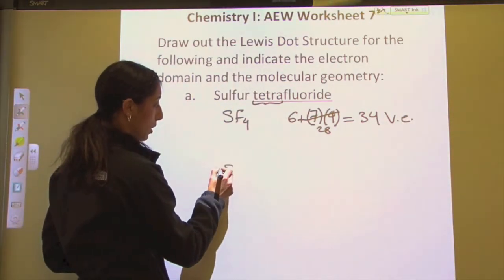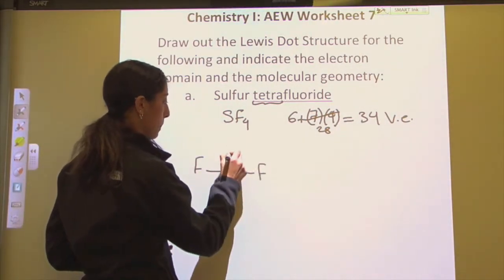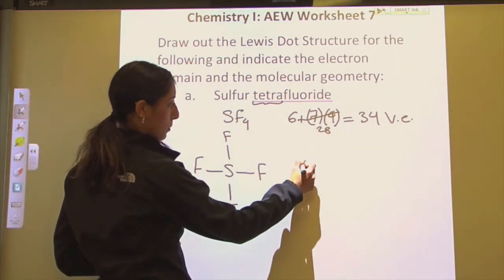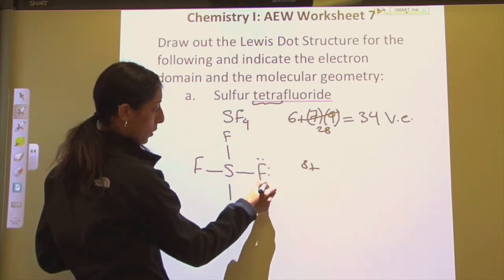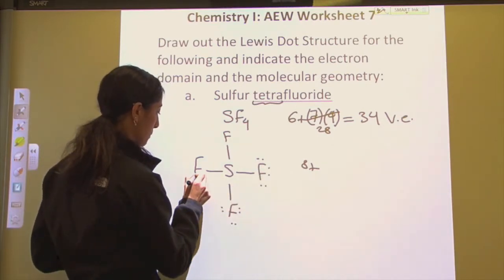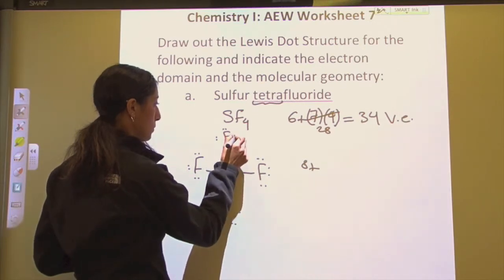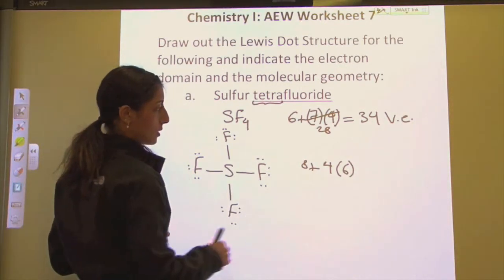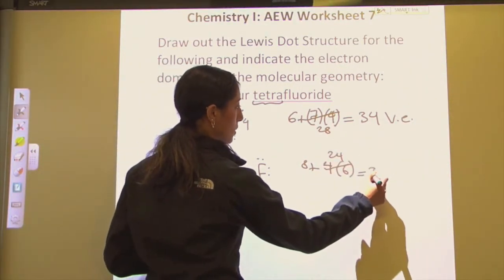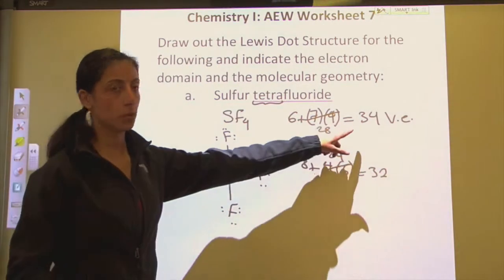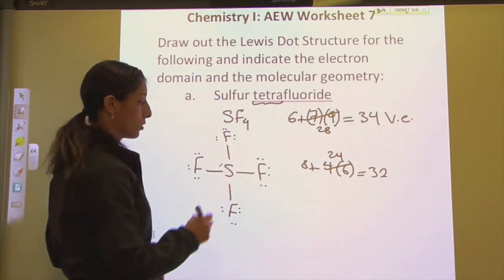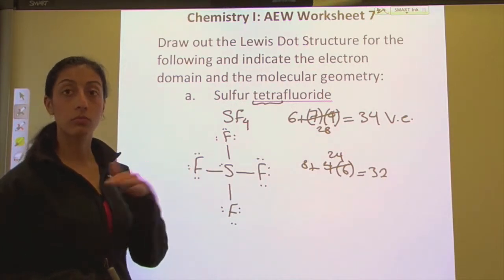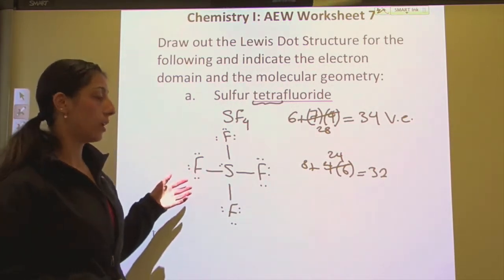Sulfur is going to be our central atom. We have our fluorines around it. So far we have eight electrons from the bonds. We're going to go ahead and give everything a full octet. So we have four fluorines, each with six valence electrons — that gives us 32 — and the other two electrons go on our central atom, which is sulfur. Remember, sulfur is in the third row of the periodic table, so it can have more than an octet.